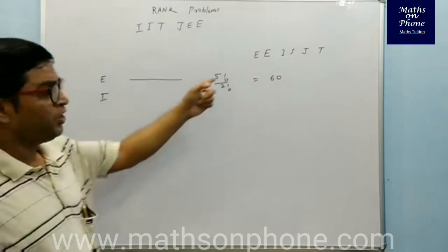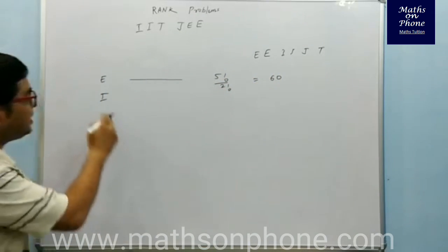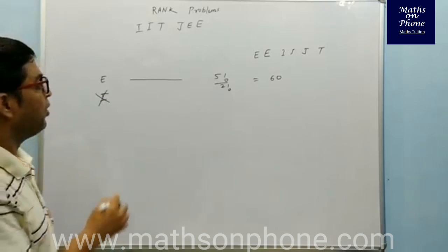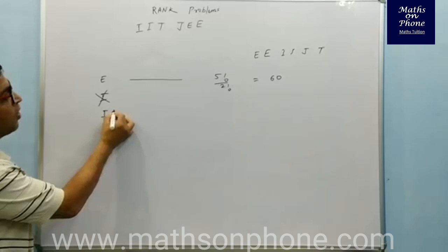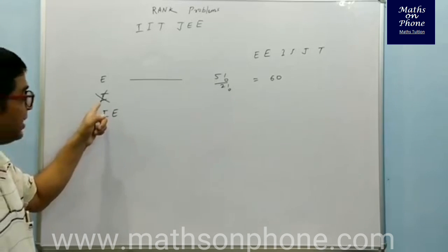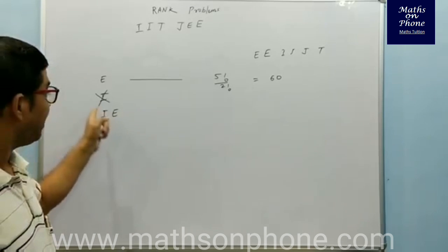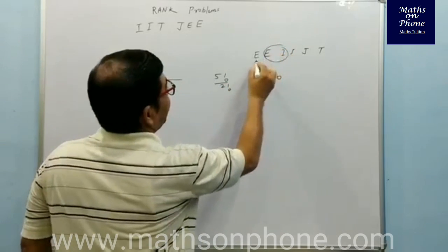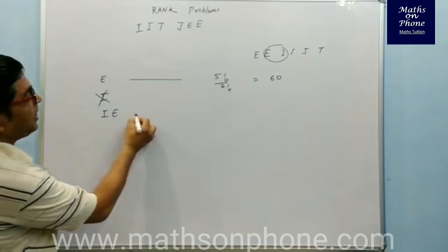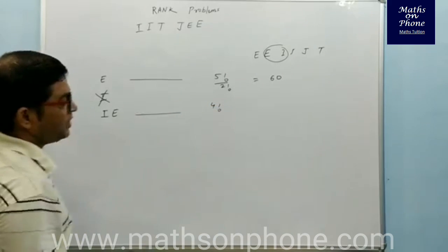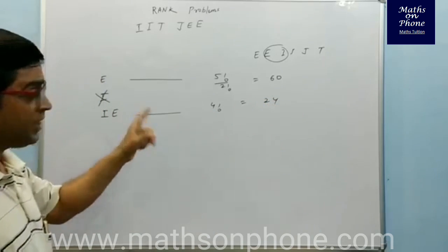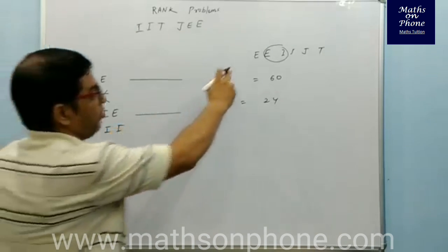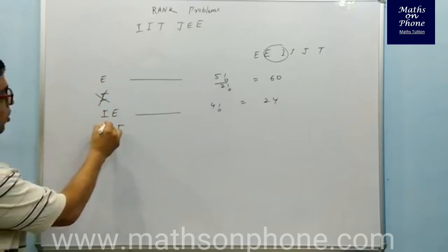Now jump to the next letter I. No need to take the second E since it is the same. I is the actual first letter of the word, so cancel it out. After canceling I, we go to I-E. Wherever we cancel a letter, we start from the next letter after it. With I-E fixed, the remaining 4 letters can be arranged in 4! = 24 ways. Luckily there is no repetition in those remaining letters.